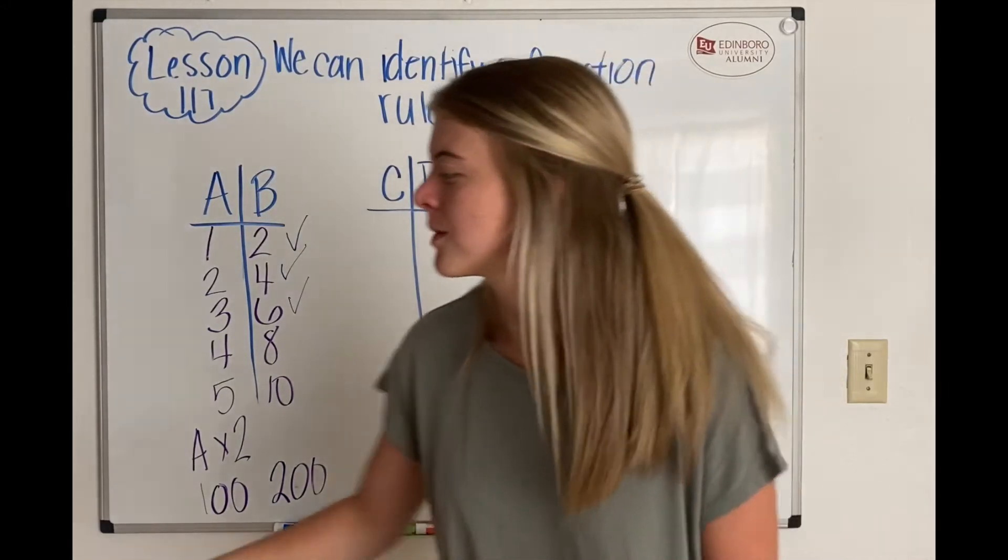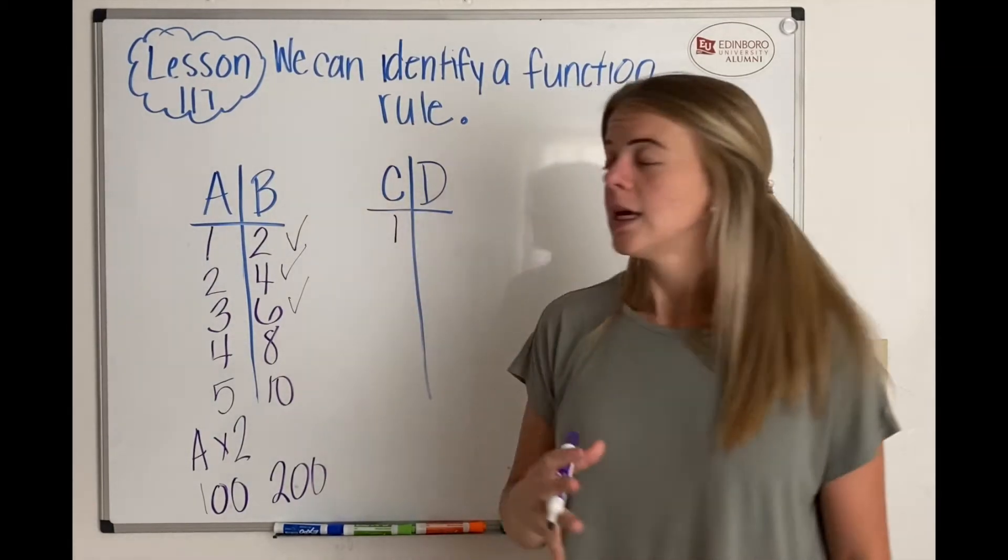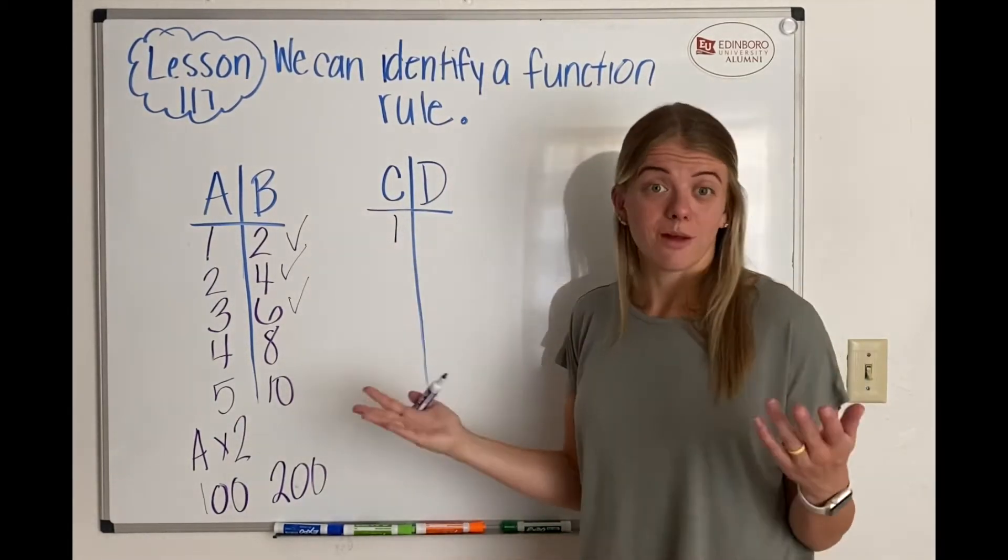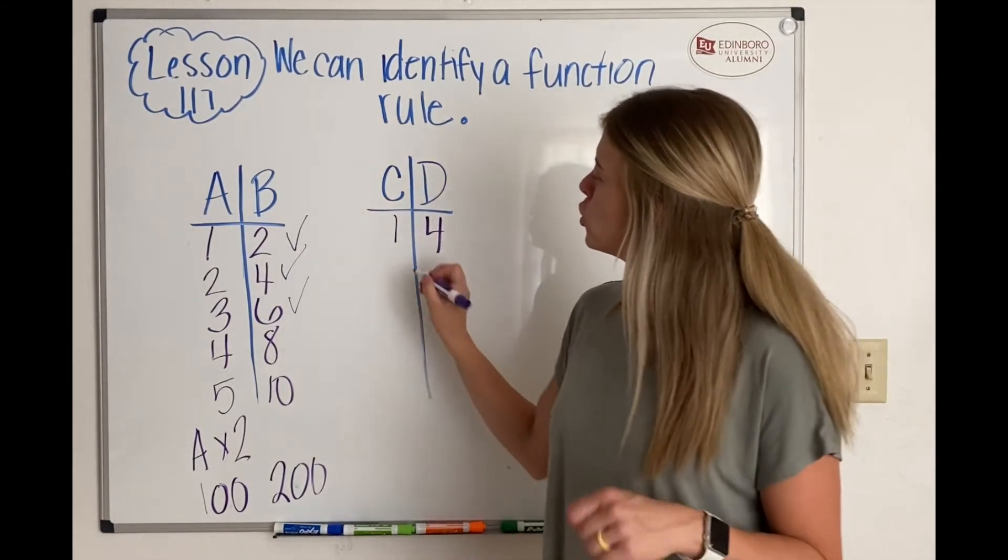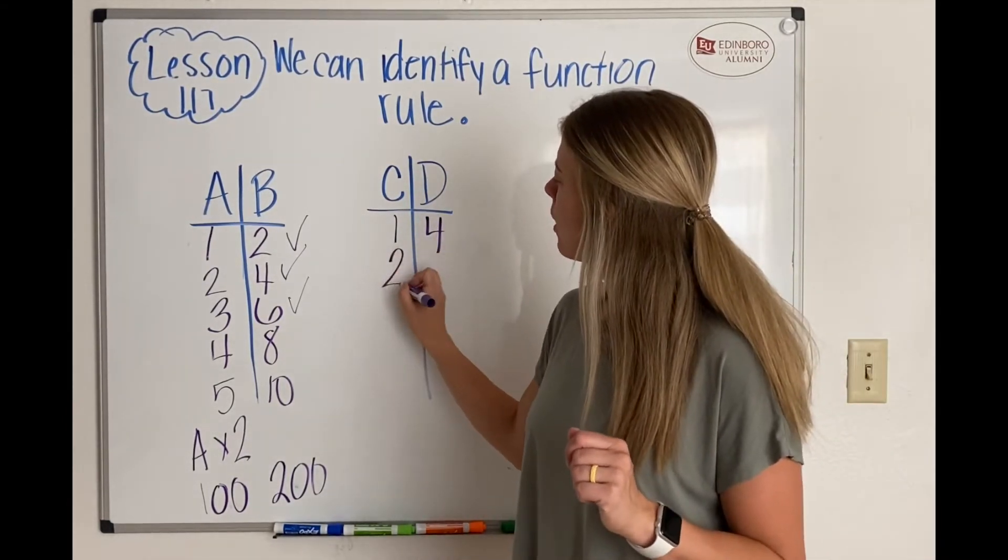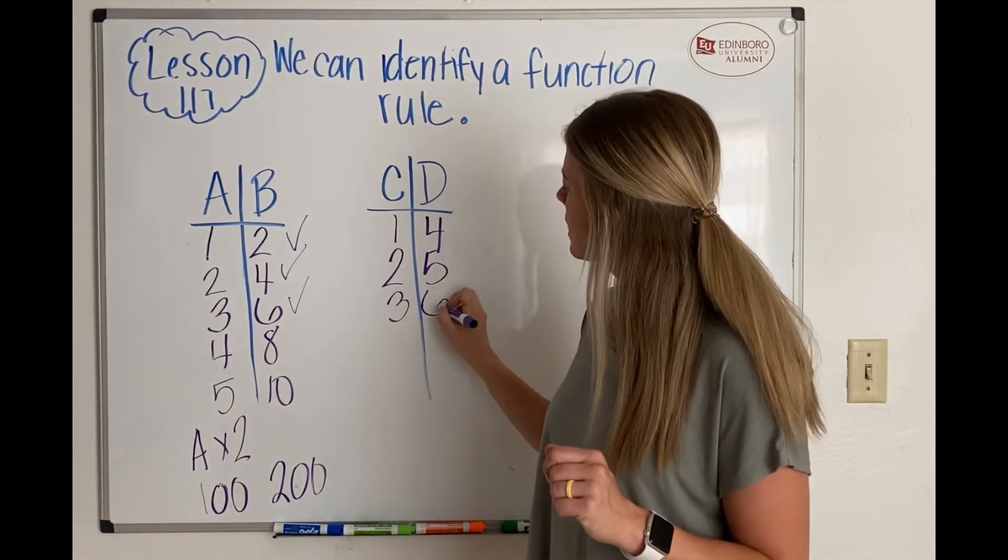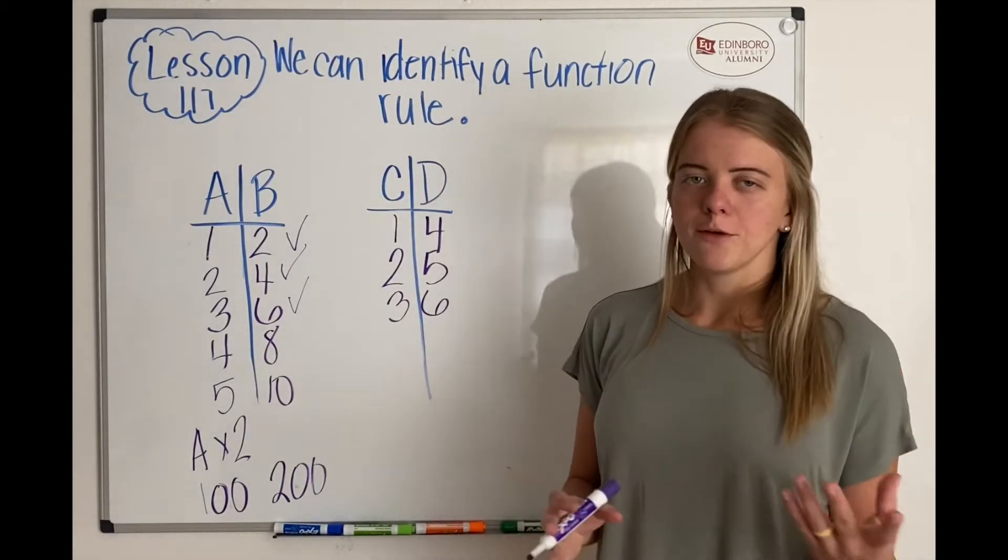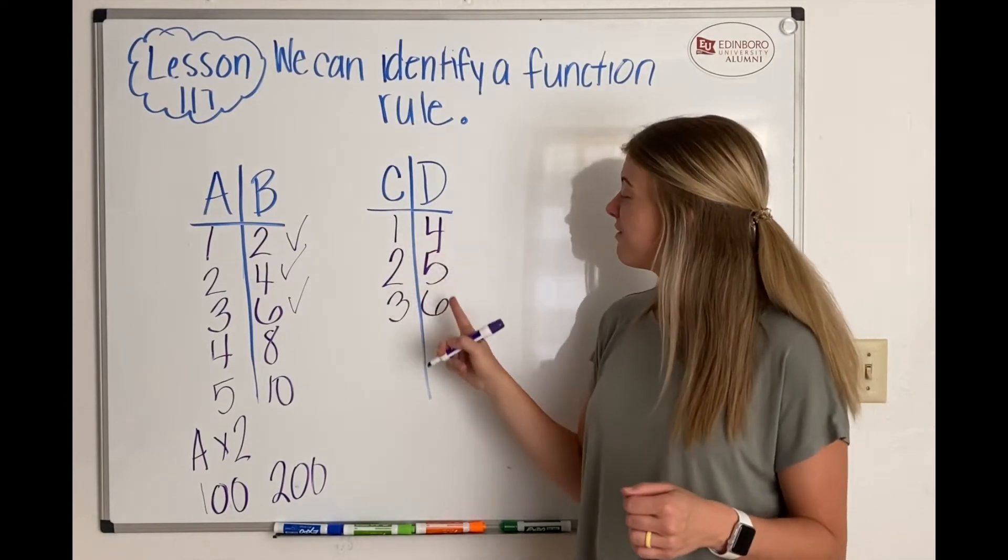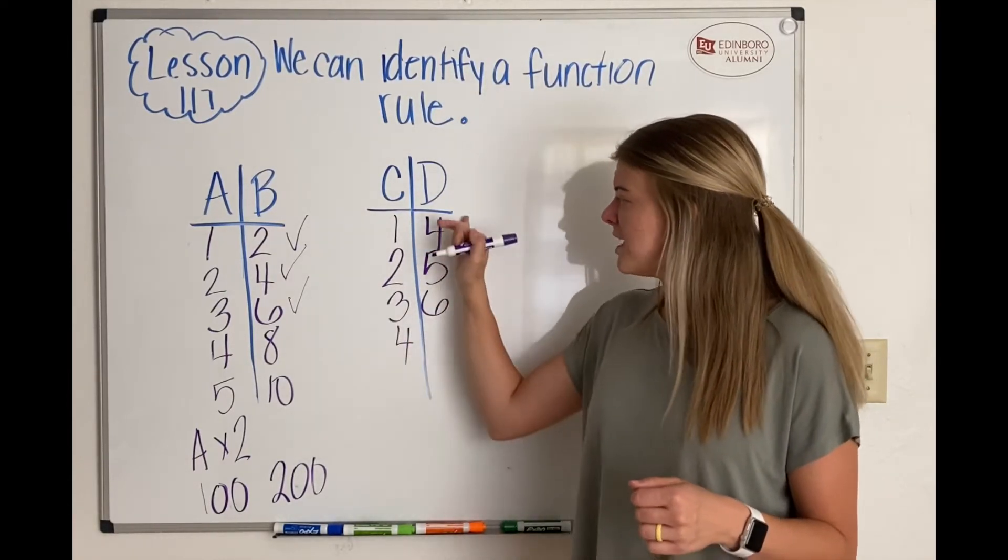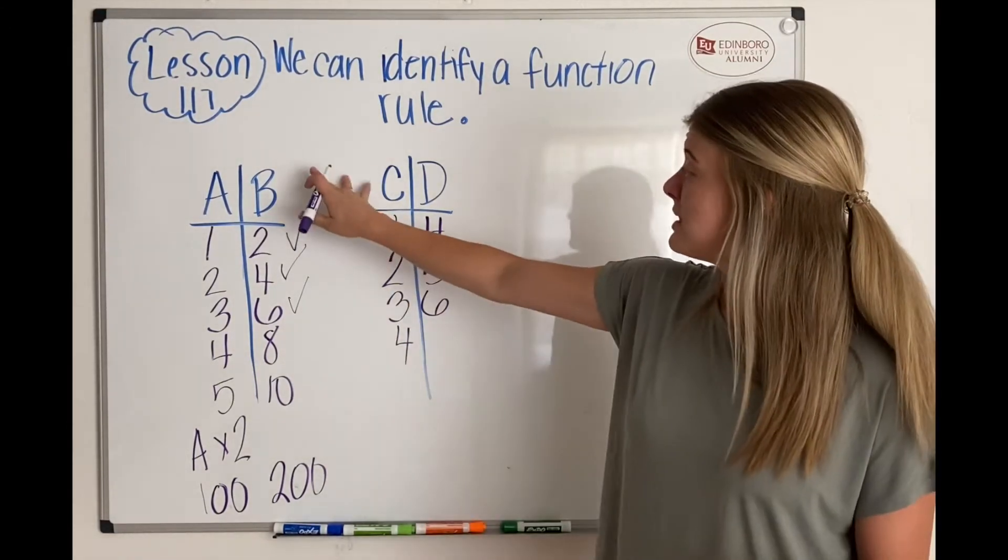Easy peasy. Let's try a different one. I'm going to start out with 1, 2, 3, then 4, 5, 6. So we know that each one of these are going up by 1, but how do I get from C to D?